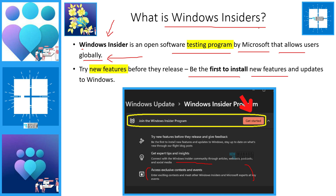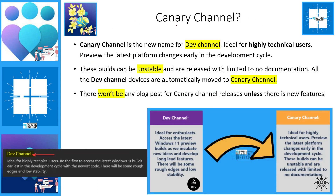If you want to join the Windows Insider program, go to the Settings application, then go to Windows Updates, click on Windows Insider Program, and click the Get Started button. You need to meet some prerequisites — one is hardware-related, and you also need to enable sending diagnostic data. I will add detailed information about this in the description of the video.